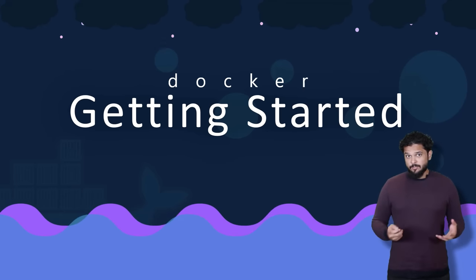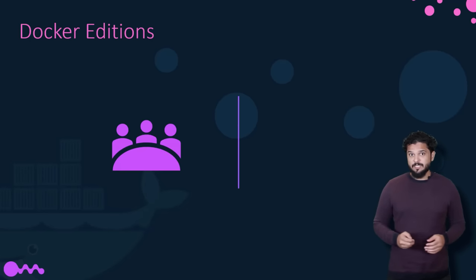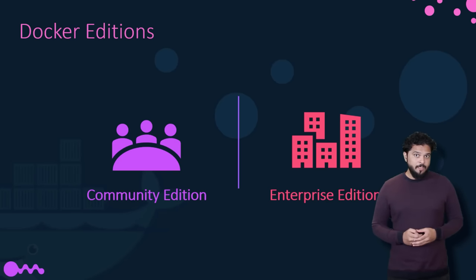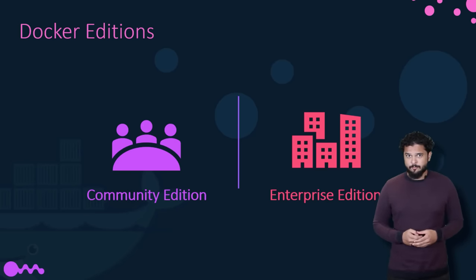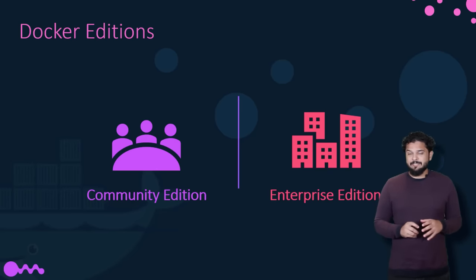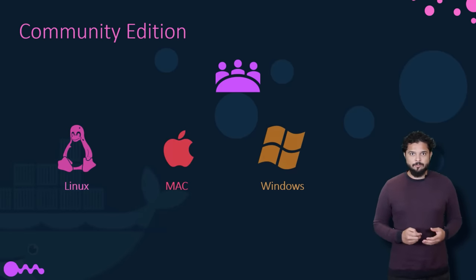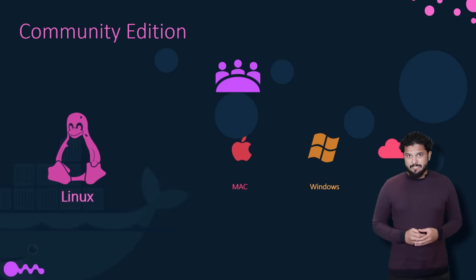We will now see how to get started with Docker. Docker has two editions: the community edition and the enterprise edition. The community edition is the set of free Docker products. The enterprise edition is the certified and supported container platform that comes with enterprise add-ons like image management, image security, and universal control plane for managing and orchestrating container runtimes. We will go ahead with the community edition. The community edition is available on Linux, Mac, Windows, or on cloud platforms like AWS or Azure. In the upcoming demo, we will take a look at how to install and get started with Docker on a Linux system.